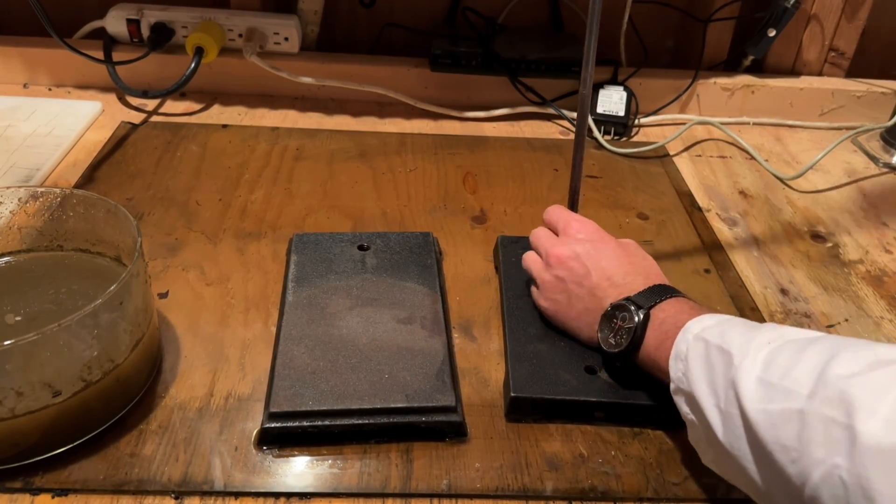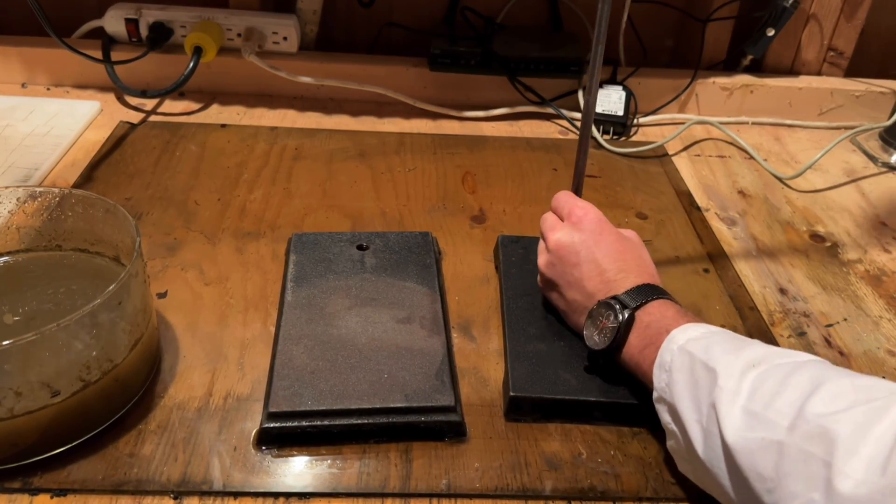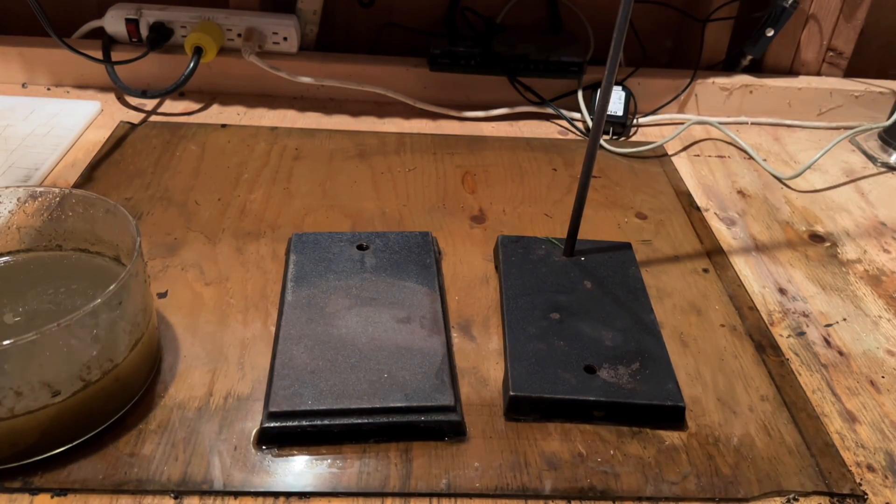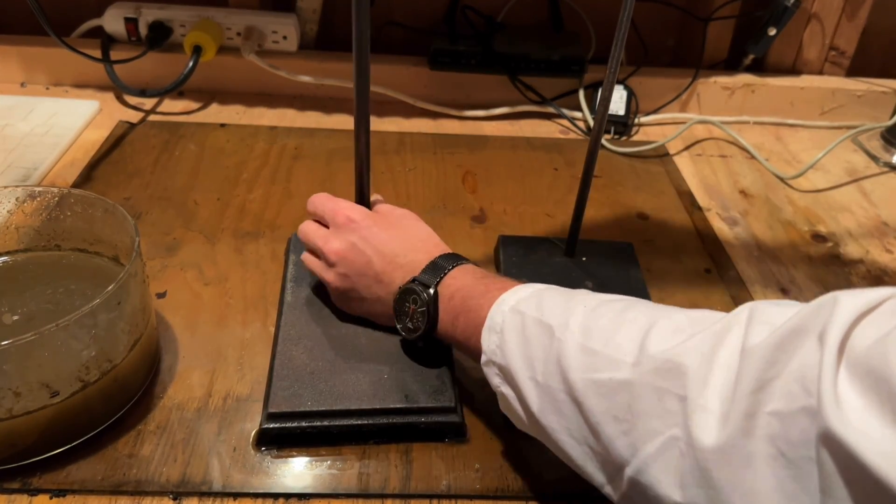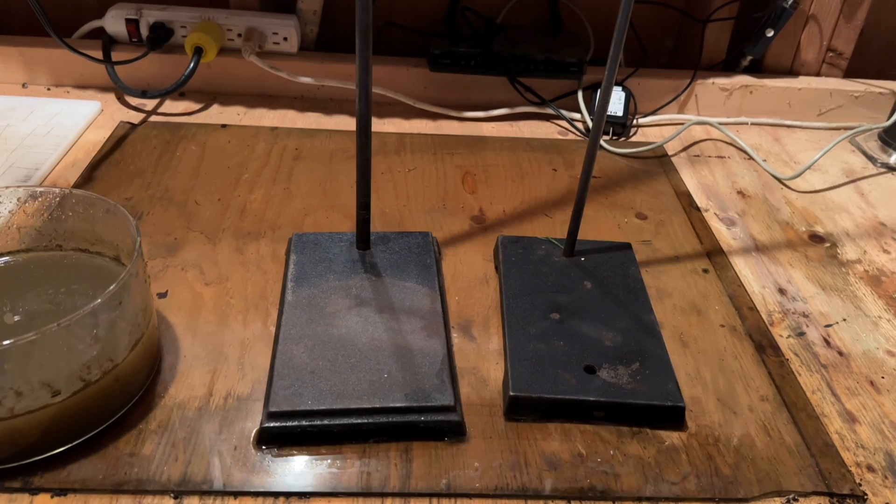Although this method does chemically convert the iron oxide back to iron, it still does require a fair bit of effort and several passes of the aluminum foil may be necessary depending on how rusty the object is.